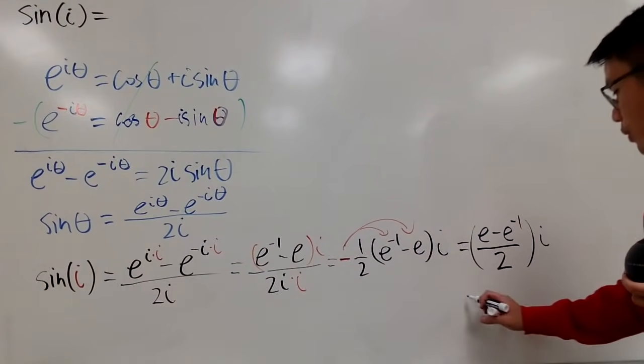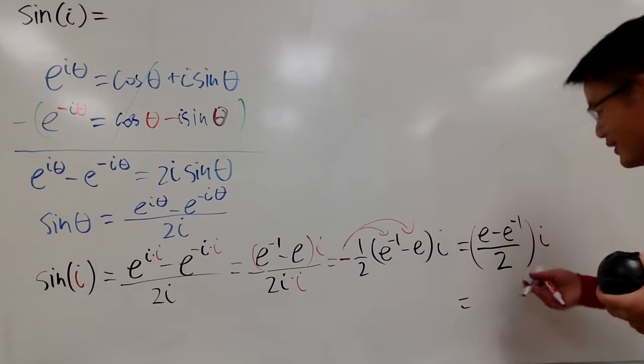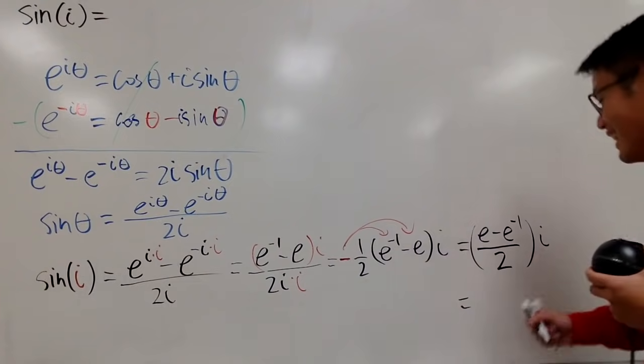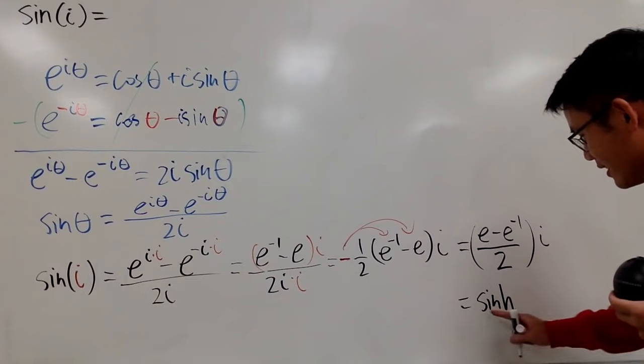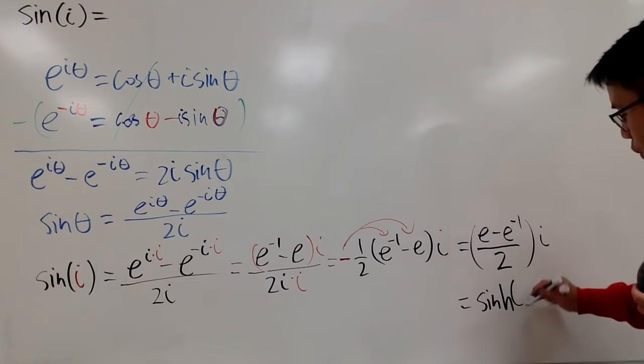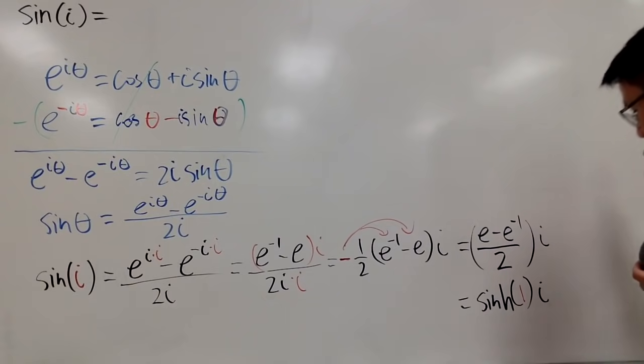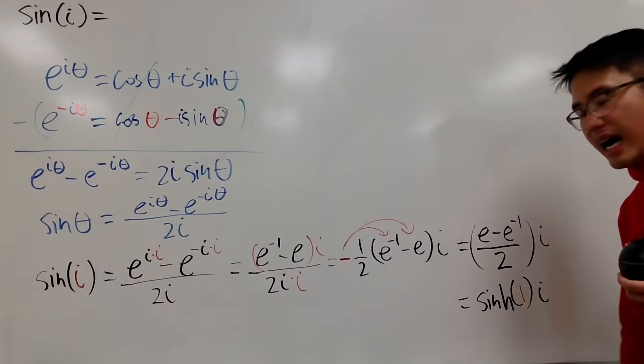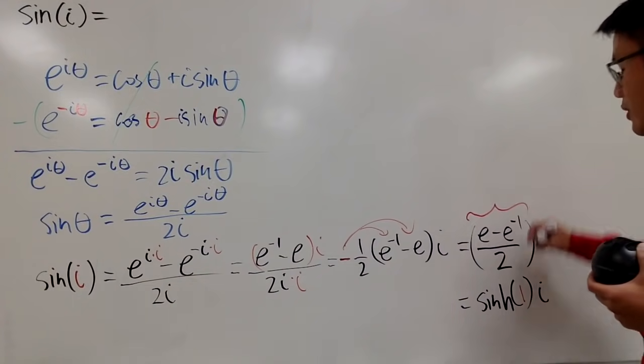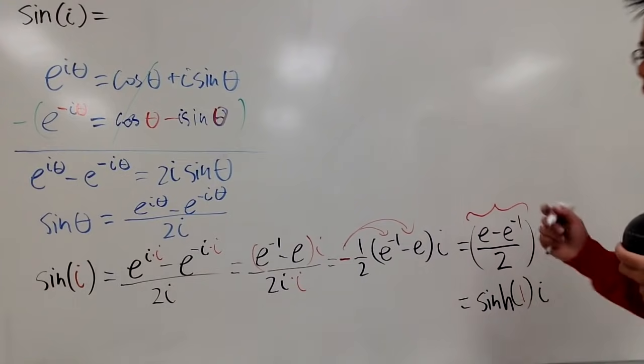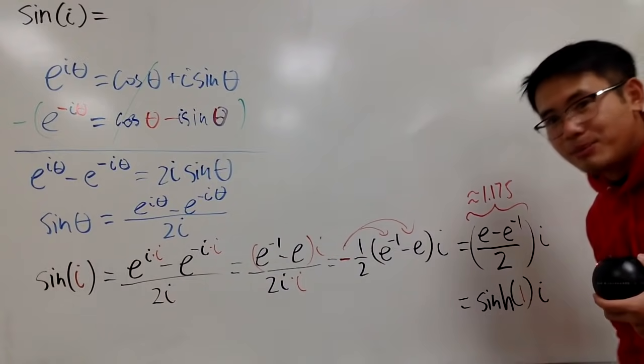So you guys can do that, or this right here should also, you should recognize this if you have been watching my videos. This right here is the hyperbolic sine function. So it's a sinh function when you plug in 1 in it. So this is sinh of 1, and you have the i on the outside. Or, if you don't like the hyperbolic sine function, you can just use a calculator. And if you do that, you get approximately 1.175. Approximately speaking.